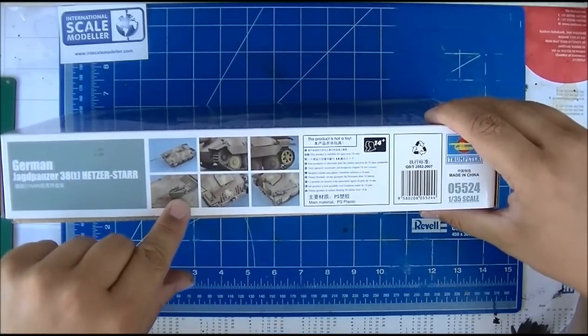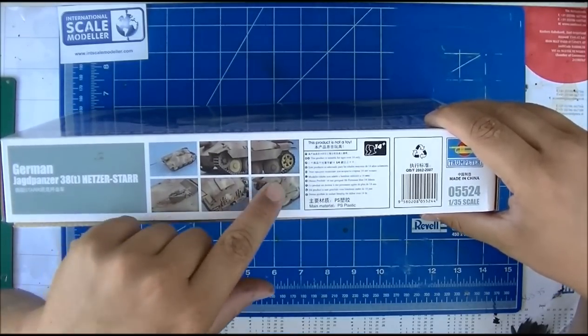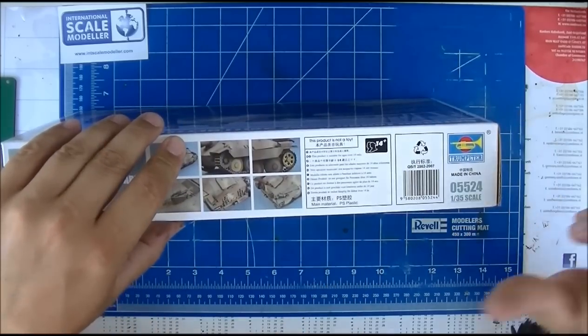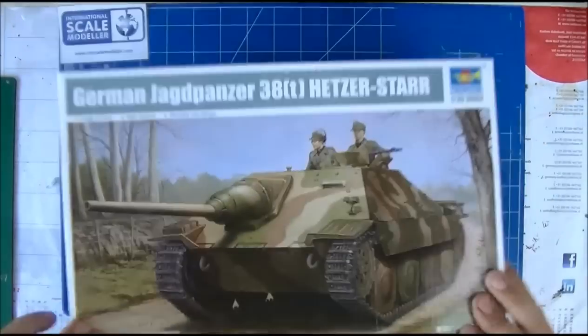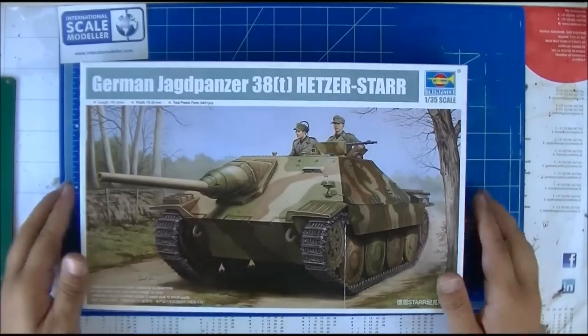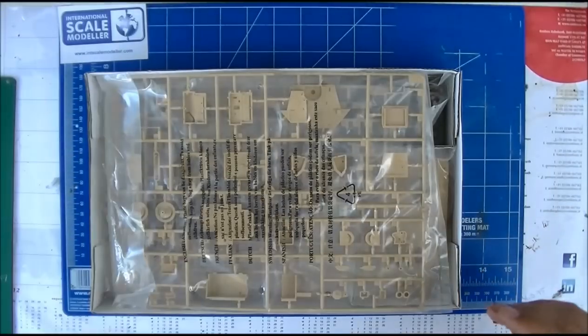Then you got some picture of the camo and the photo etch. You also got the number 05524, same here with the build-up model. Little MG on top, that's a little nice detailing. And it's a 2011 kit.